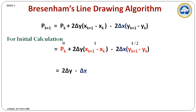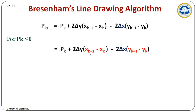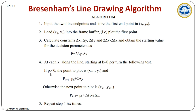After finding the initial decision parameter, if the value is negative, we choose the pixel where only the x coordinate is incremented. The yk value stays the same, so the difference in y becomes 0. When the decision parameter is less than 0, we only increment the x coordinate and keep y the same. The next decision parameter becomes pk plus 2(delta y).